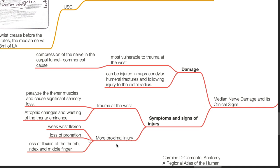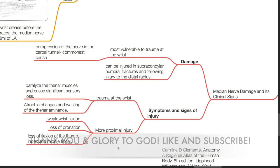For more proximal injury, there will be weak wrist flexion, loss of pronation, loss of flexion of the thumb, index and middle finger.